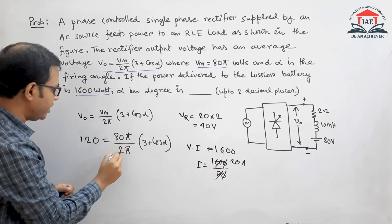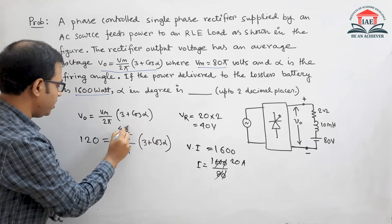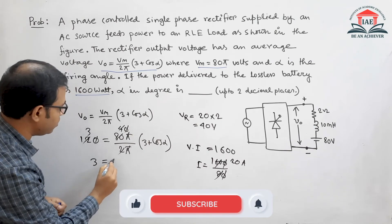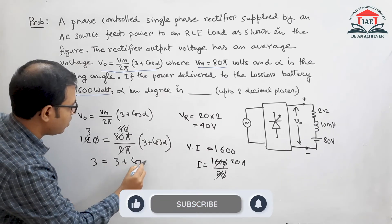Now π and π will get cancelled. This will be 40, zeros will be cancelled, and this will be 3. So we are getting 3 equals 3 plus cos α.